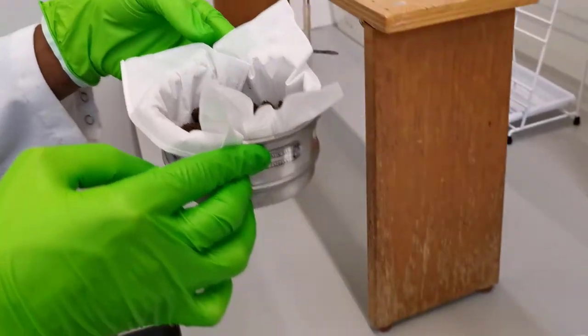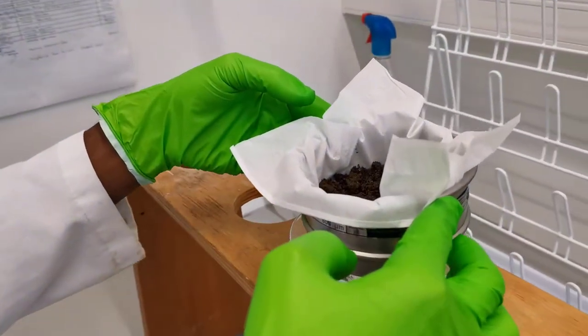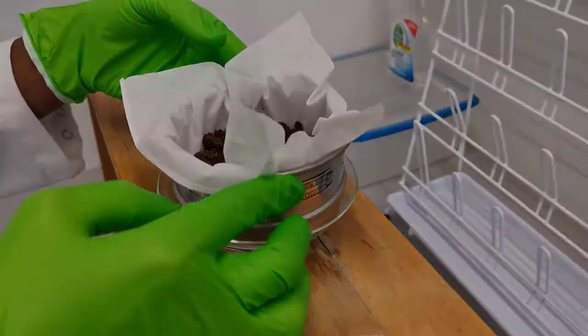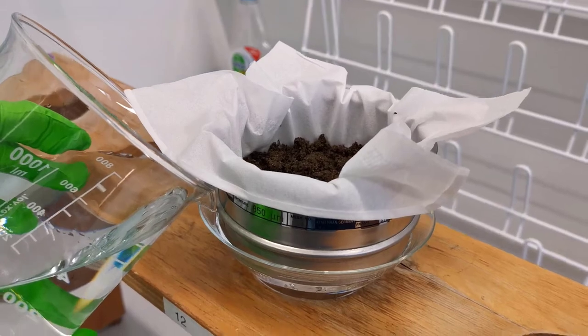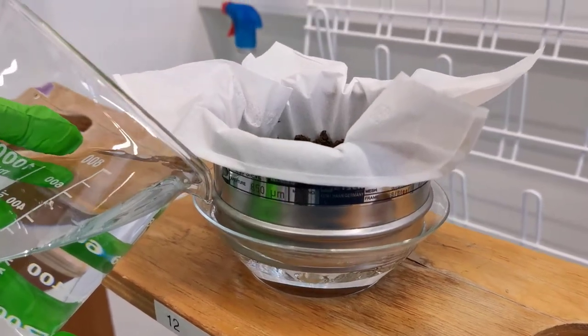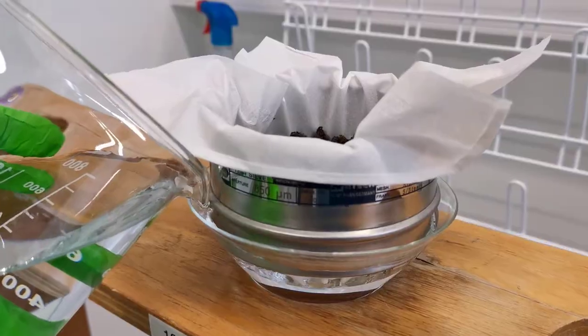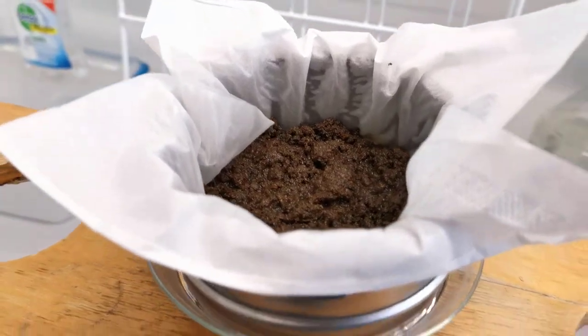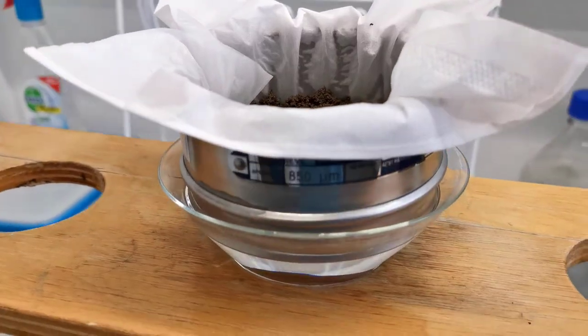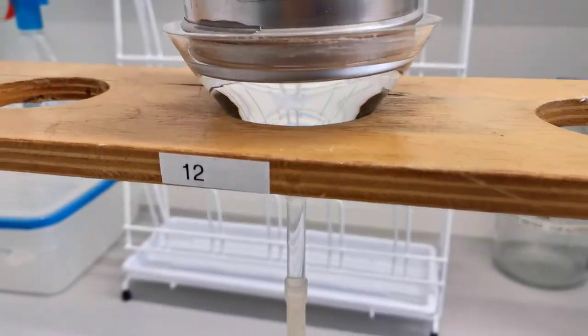Carefully transfer the sieve containing the soil or plant material onto the funnel and add water into the funnel such that the water slightly touches the soil or the plant material. You could also choose to cut off extra ends of the tissue paper to avoid fast wicking away of water.